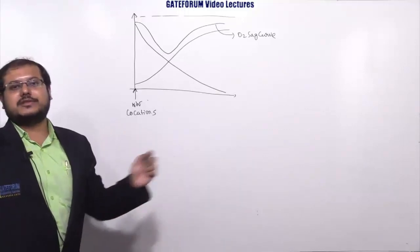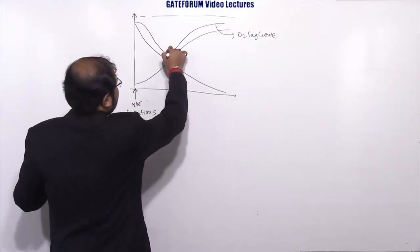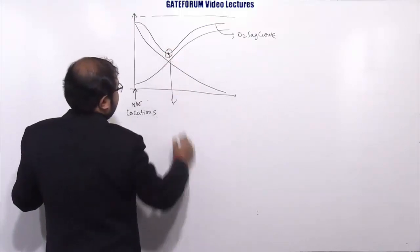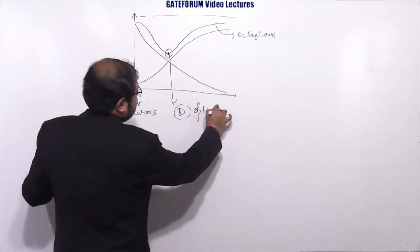It is lowest at a point downstream of location S. Location S downstream in that side, it will be lowest at a particular point. So option D is the correct answer for this question.